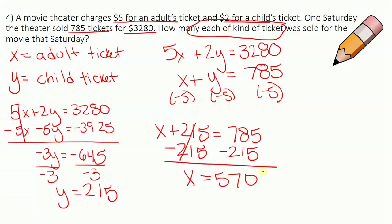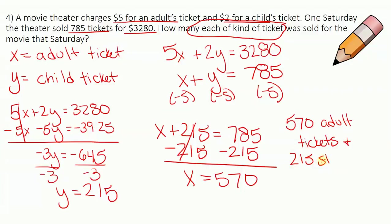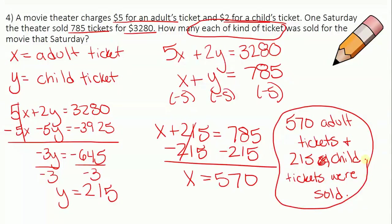Final answer: 570 adult tickets and 215 child tickets were sold. That is the final answer to this system. And that's the end of this video — see you later, savers!